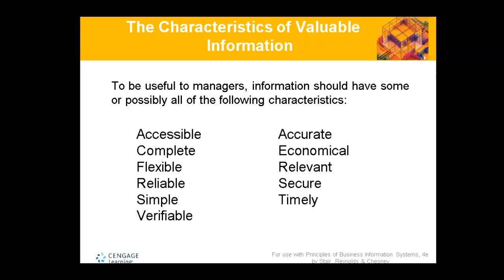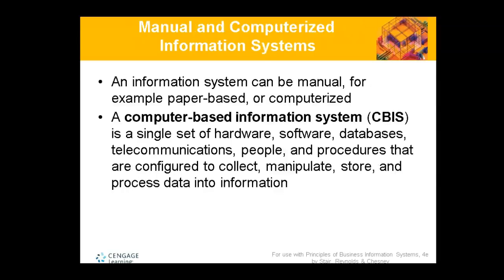The characteristics of valuable information define what makes a good information system. These include being accessible, complete, flexible, reliable, simple, accurate, economic, relevant, secure, and timely. A good information system needs to have all or most of these characteristics in order to be effective. Manual and computer-based systems exist — CBIS stands for Computer-Based Information System.